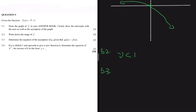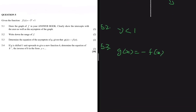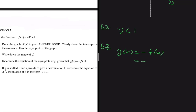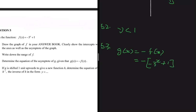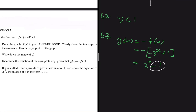For 5.3: determine the equation of the asymptote of g, given that g(x) = -f(x). Substituting f(x), we get g(x) = -(-3^x + 1), which multiplies out to 3^x - 1. The constant term gives us the asymptote, so the asymptote of g is y = -1. Since we have a positive coefficient, we'd expect the graph to be above the asymptote.